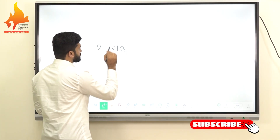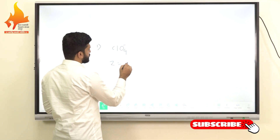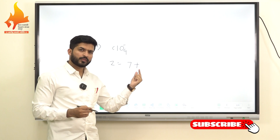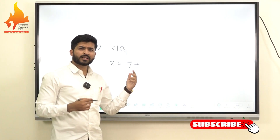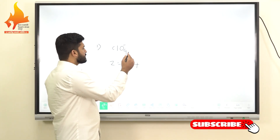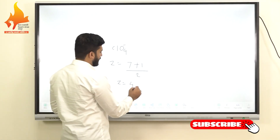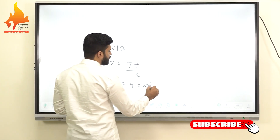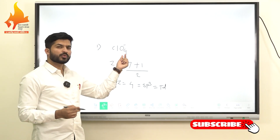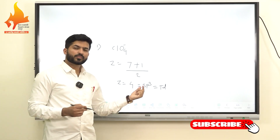For ClO4 minus, the central atom is chlorine with 7 valence electrons. Oxygen is a divalent atom so we cannot add surrounding atoms in the formula. However, there is a minus 1 charge, which we add as plus 1. Z equals 7 plus 1 divided by 2, which equals 4. With 4 electron pairs, hybridization is sp3 and geometry is tetrahedral. Here all 4 electron pairs are bond pairs with no lone pair, so geometry and shape are both tetrahedral.